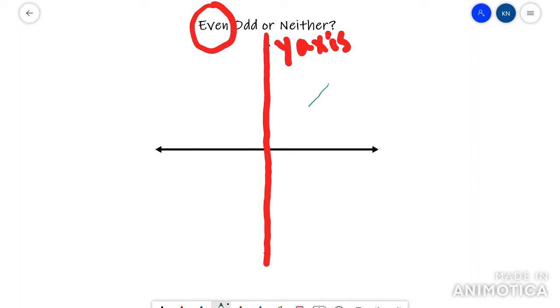For example, an absolute value function would be even because this right side mirrors the left side.